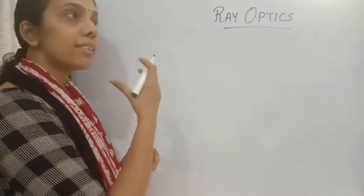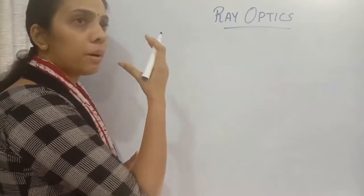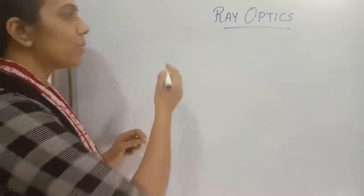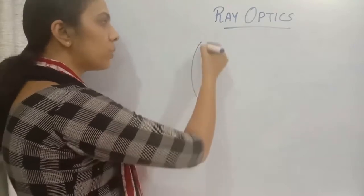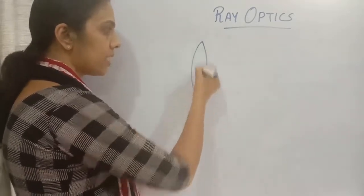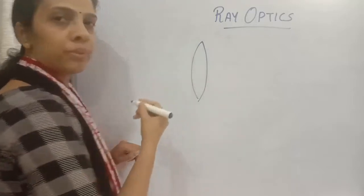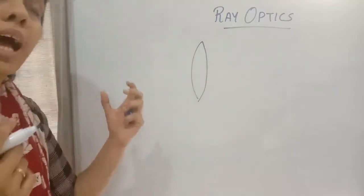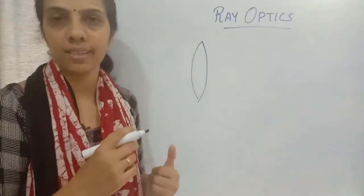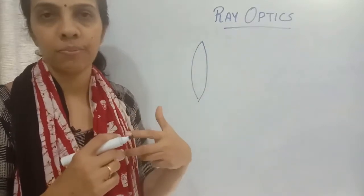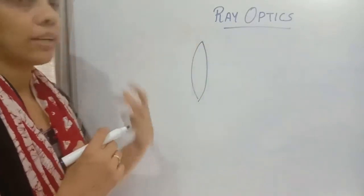Spherical surfaces means it will be part of a lens. The lens includes two spherical surfaces — one here and the other one here. So we need to understand what will happen in the refraction of these spherical surfaces at each phase, and a formula derivation is involved.